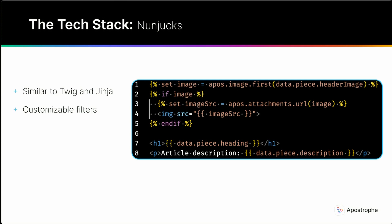One of the great strengths of Nunjucks is its extensibility. Developers can easily create custom content filters to manipulate data and templates, allowing for a great deal of flexibility when it comes to displaying data in views. Nunjucks templates have block inheritance, allowing them to extend templates. This makes it easy to create reusable templates and reduce duplicated code. Markup is further reduced through the use of reusable fragments and components that can be imported into any template, making it easy to create modular templates that can be reused across your application.